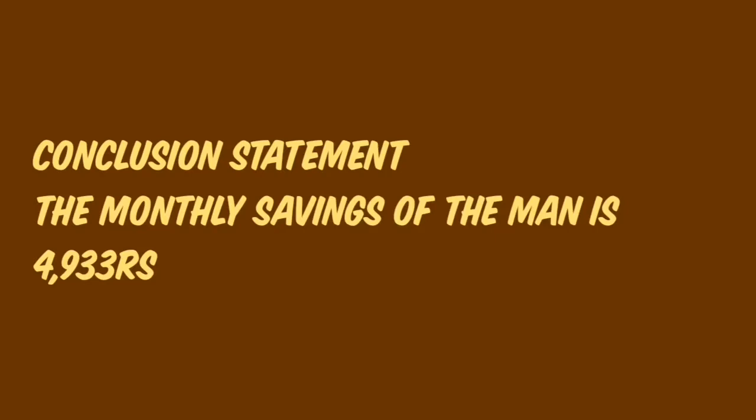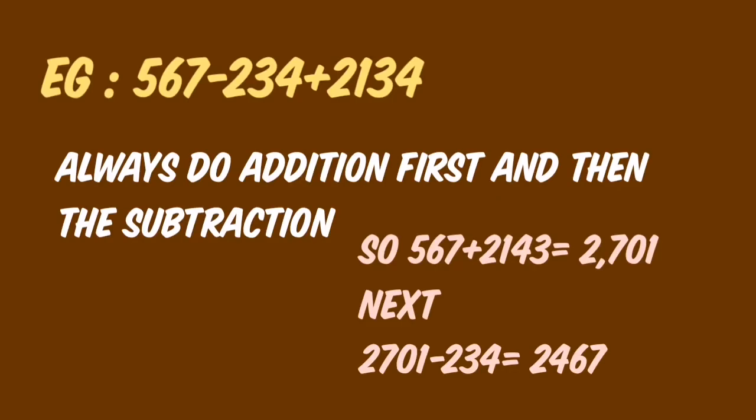So the savings is 12,500 minus 7,567. The monthly saving of the man is 4,933 rupees. Next topic is simplification, which involves both addition and subtraction. For example: 567 minus 234 plus 2134.